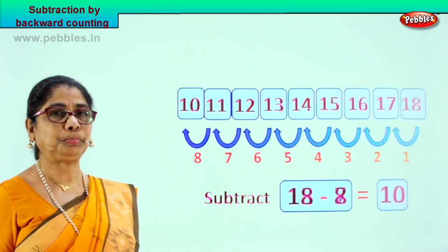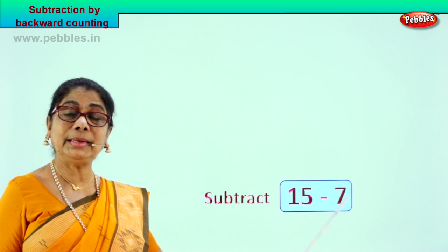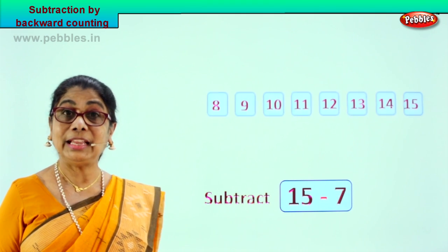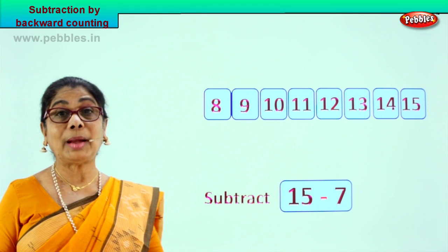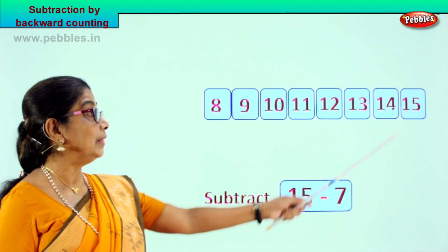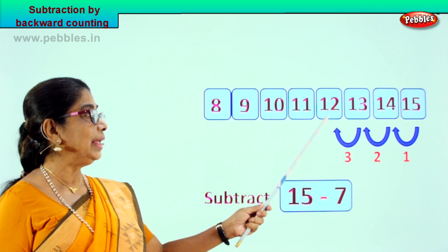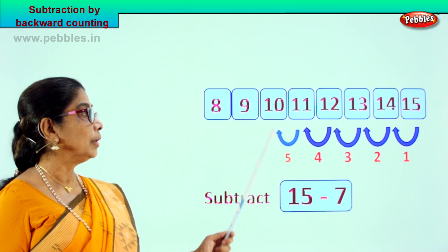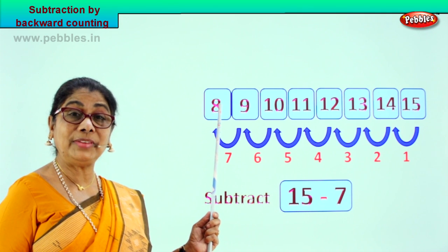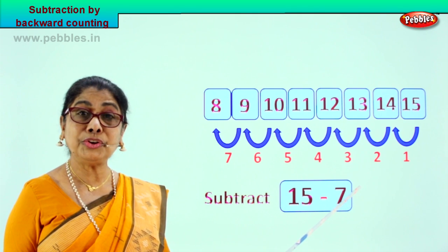Now let's take a new exercise. Look at what we have here. The sum is 15 minus 7. From 15 we must take away 7 — from 15 we must count 7 steps backward and you will come upon the answer. Let's go to 15 and start counting 7 steps backward. 1, 2, 3, 4, 5, 6, 7. From 15 we came backward 7 steps and our answer is equal to 8.